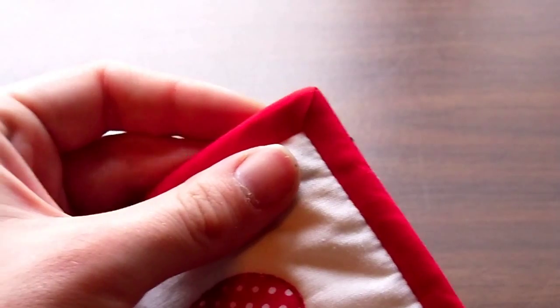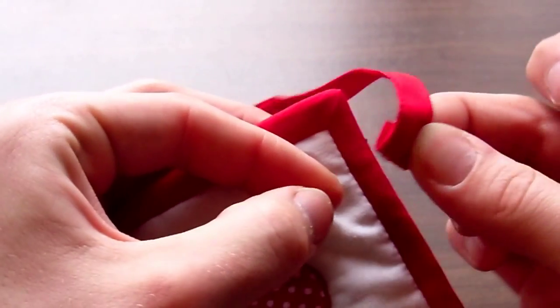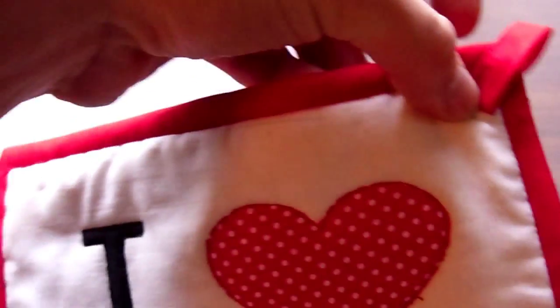Now let's put those hanging loops on. You can attach it at either top corner. To do this, fold under one end of the loop in place at front corner and hold in place with your fingers.